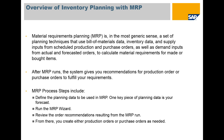The MRP process steps include defining planning data to be used in MRP. One key planning data is your forecast. Run the MRP wizard, review the order recommendations resulting from the MRP run, and from there you create either production orders or purchase orders as needed.